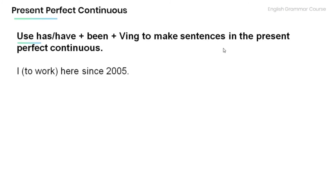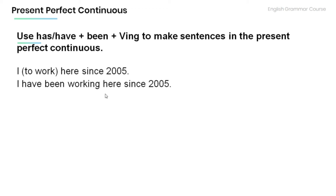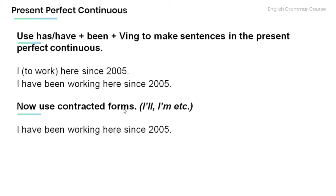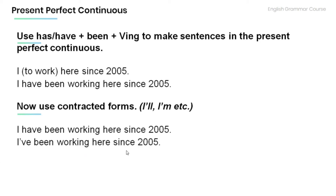Now let's review and practice a bit. Remember that we use has or have plus been plus verb-ing to make sentences in the present perfect continuous. Read the sentence below and provide the present perfect continuous form: I have been working here since 2005. Now use contracted forms: I've been working here since 2005.